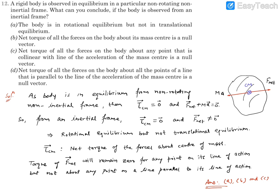Now let's read statement B. It says the net torque of all forces on the body about its mass center is a null vector. Yes, that's exactly what we are saying — the torque about the center of mass is a null vector. So B is also correct.